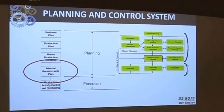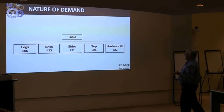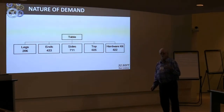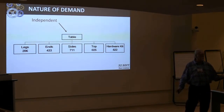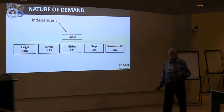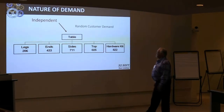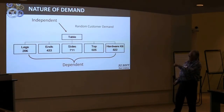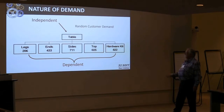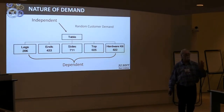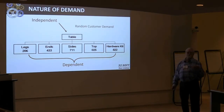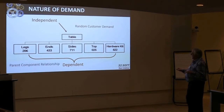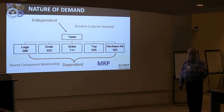MRP is built upon demand, primarily parent-component demand. Independent demand is the demand placed upon an item that is at the randomness of customer demand. MRP is driven through what we call dependent demand — the fact that legs go into a table, the end, sides, top, hardware kit — those are dependent demand items defined in your bill of material system, or if you use formulas in module 51.